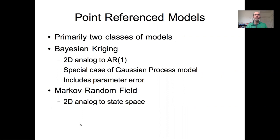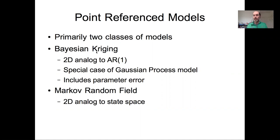The first approach is analogous to autoregressive models, where we construct a covariance matrix as a function of distance and use that in a larger multivariate normal as the error term on our process model. This is what I'm calling Bayesian Kriging — though there's also a maximum likelihood way of doing it — but the basic idea is taking what we learned in Kriging and applying that to actually modeling the covariance matrix in an error model.